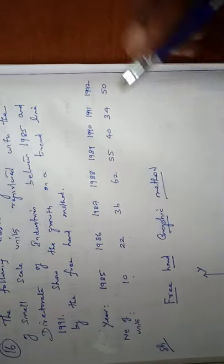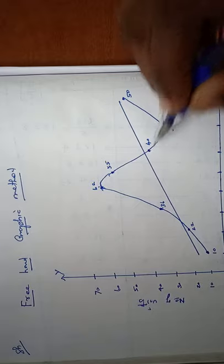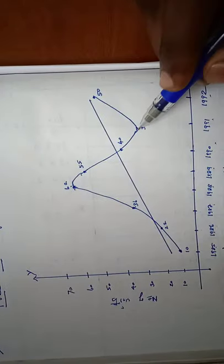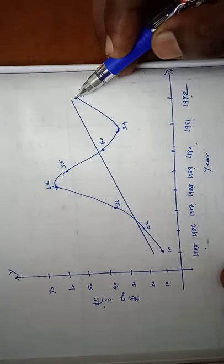Again 1990, 40 units. And 1991, 34 units.